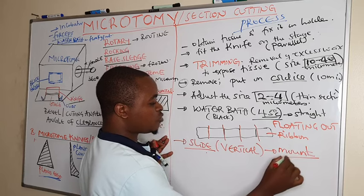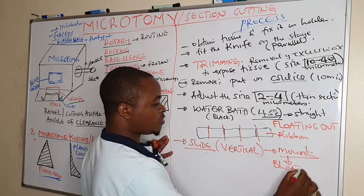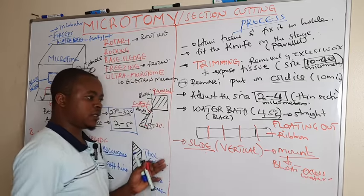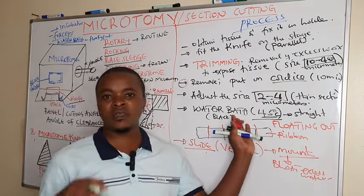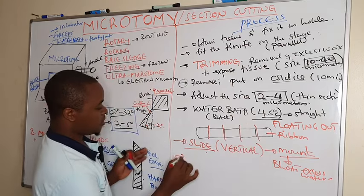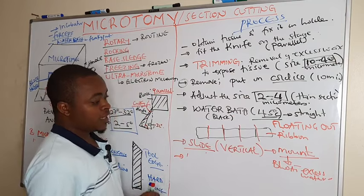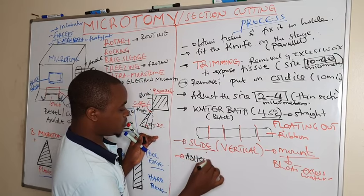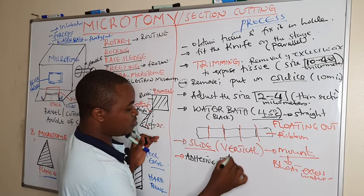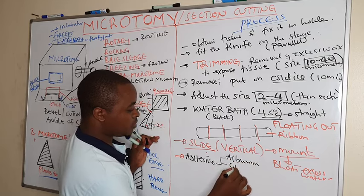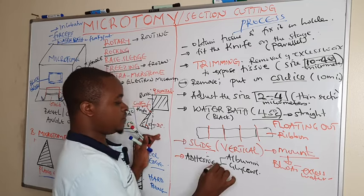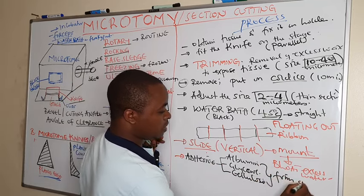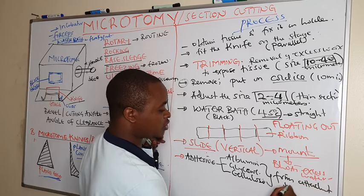After mounting, you blot to remove excess water which might have been picked during mounting. Sometimes we add adhesive materials — either smeared on the slide or added in the water bath. Among the adhesive materials used are albumen, glycerol, and glycerol in combination with albumen. We can also use cerrose for neighbor firm attachment of the section on the slide.